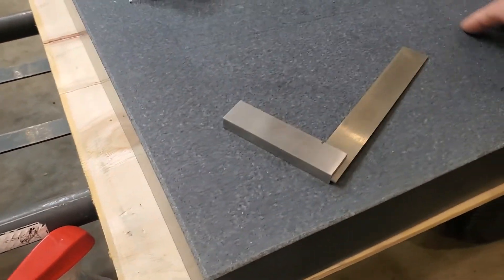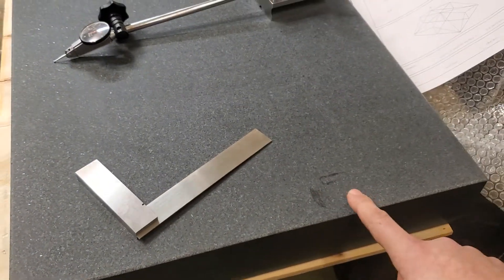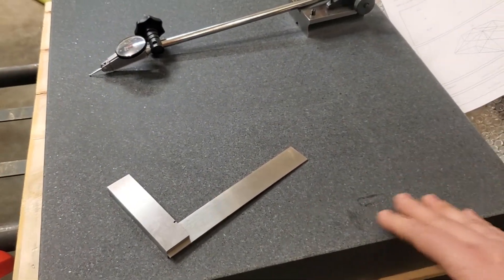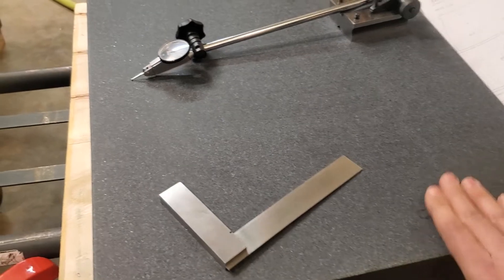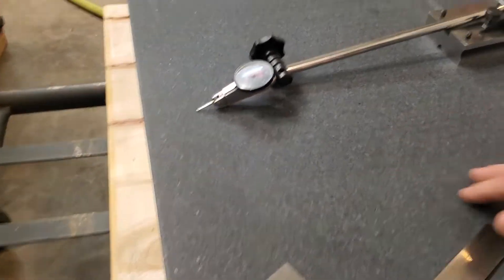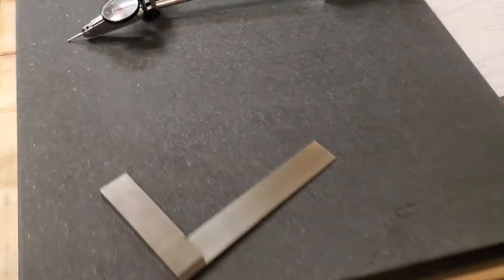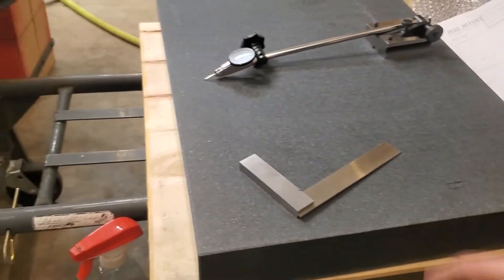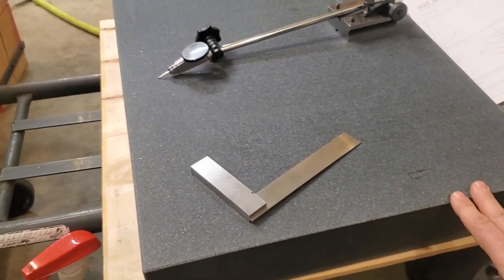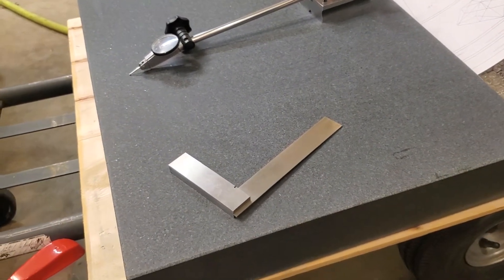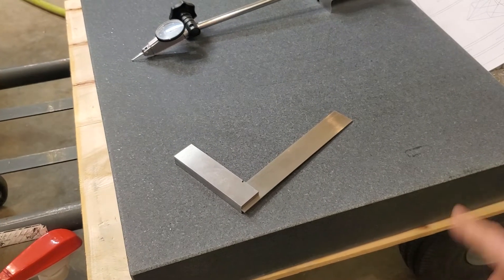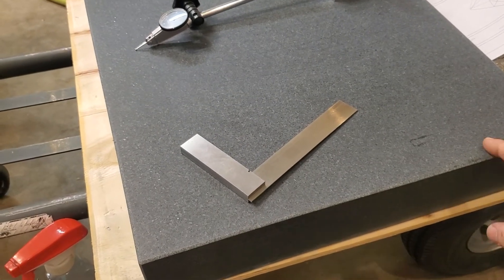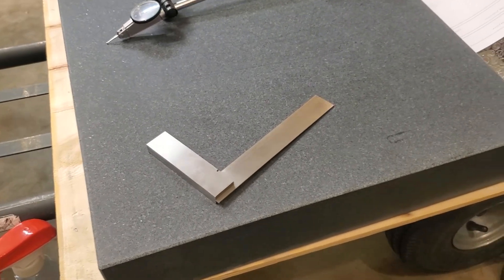I hardly have anyone viewing my videos, but if someone sees this and knows if you're supposed to wipe anything on top of this like a mineral oil or anything, let me know. Otherwise I'll do some research. But that's a granite surface plate from HHIP. I think I paid $235 to have this shipped to my door, so 18 by 24 by 3.